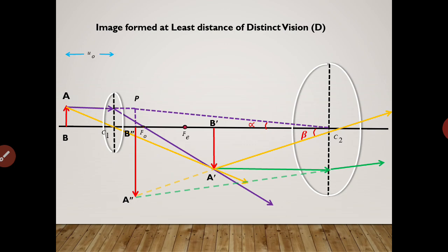Uo is the object distance for the objective lens, Vo is the image distance for the objective lens, and Ue is the object distance for the eyepiece. Please note that A'B' acts as the object for the eyepiece, and the final image formed is the image seen through the eyepiece.